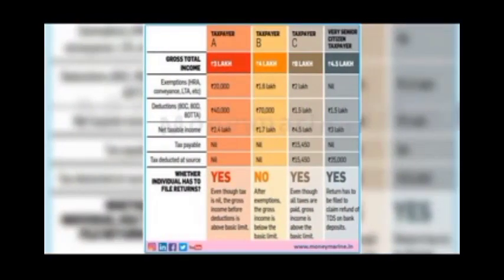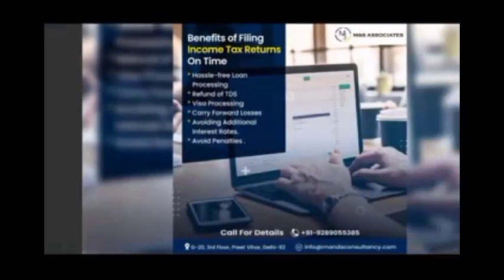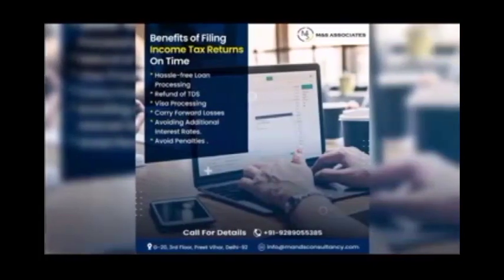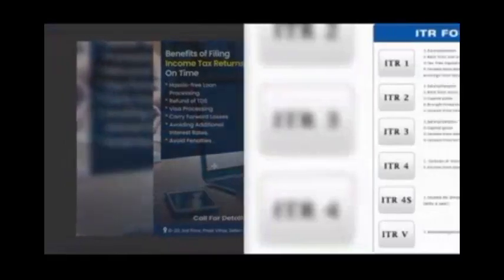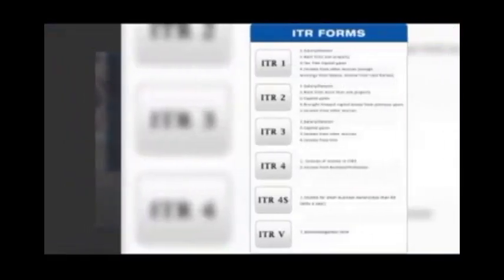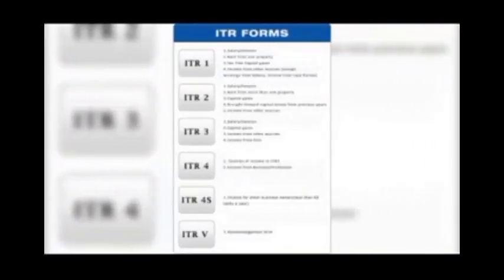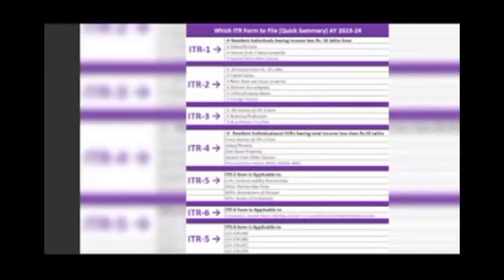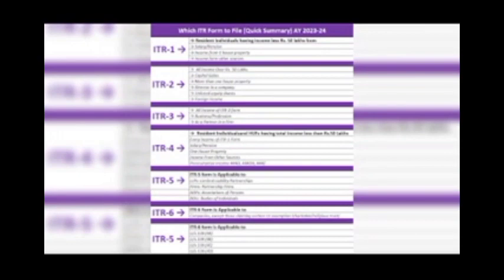Next, ITR 2 is for persons who get pension, those who have more than one property, foreign property, capital gains, or agriculture income of more than 5,000. ITR 3 is for business owners and those who earn from a profession. ITR 4 is for partners in a business and professionals whose income is more than 50 lakhs.